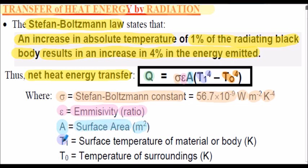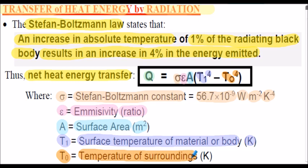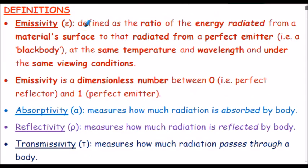T1 is the surface temperature of the material or body we're considering, that will be in Kelvin. And T0 is the temperature of the surroundings, again in Kelvin. So that's the net heat transfer equation we'll be using that underpins this presentation.